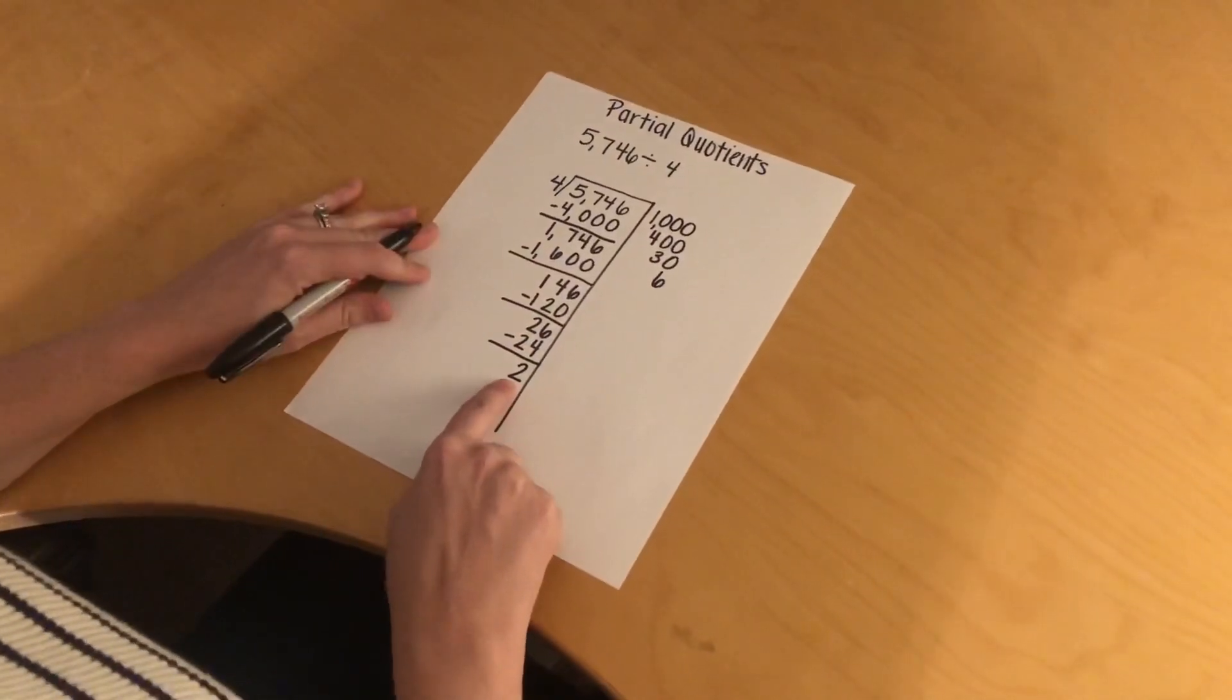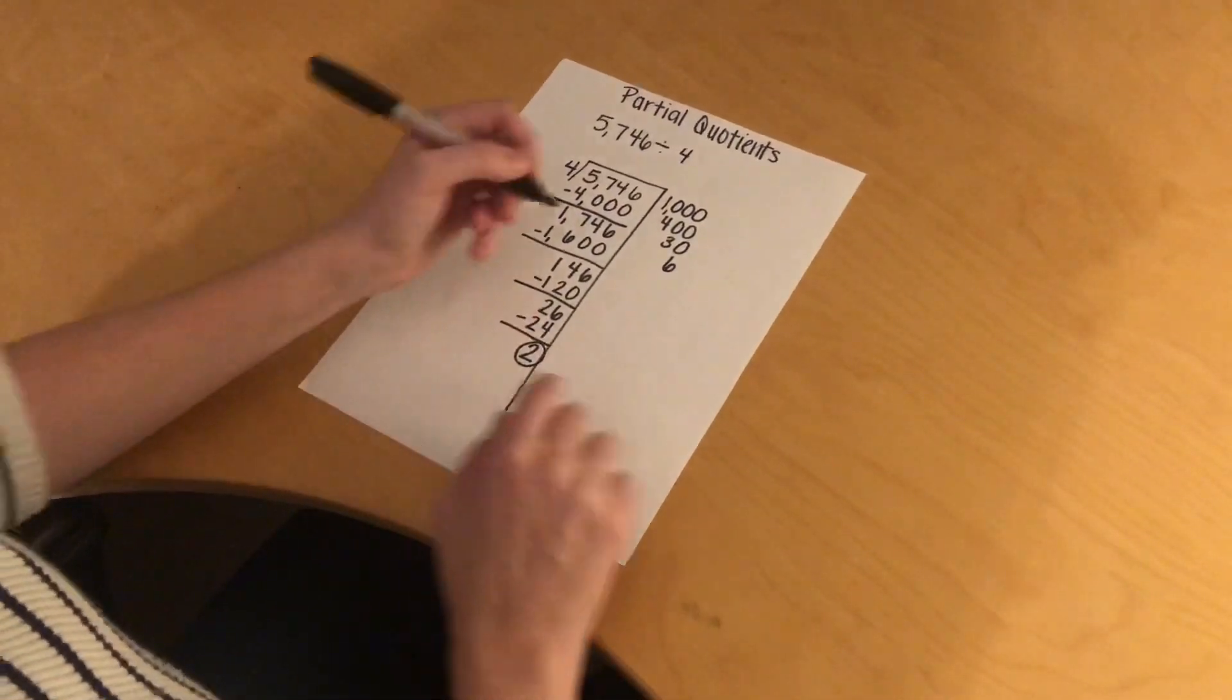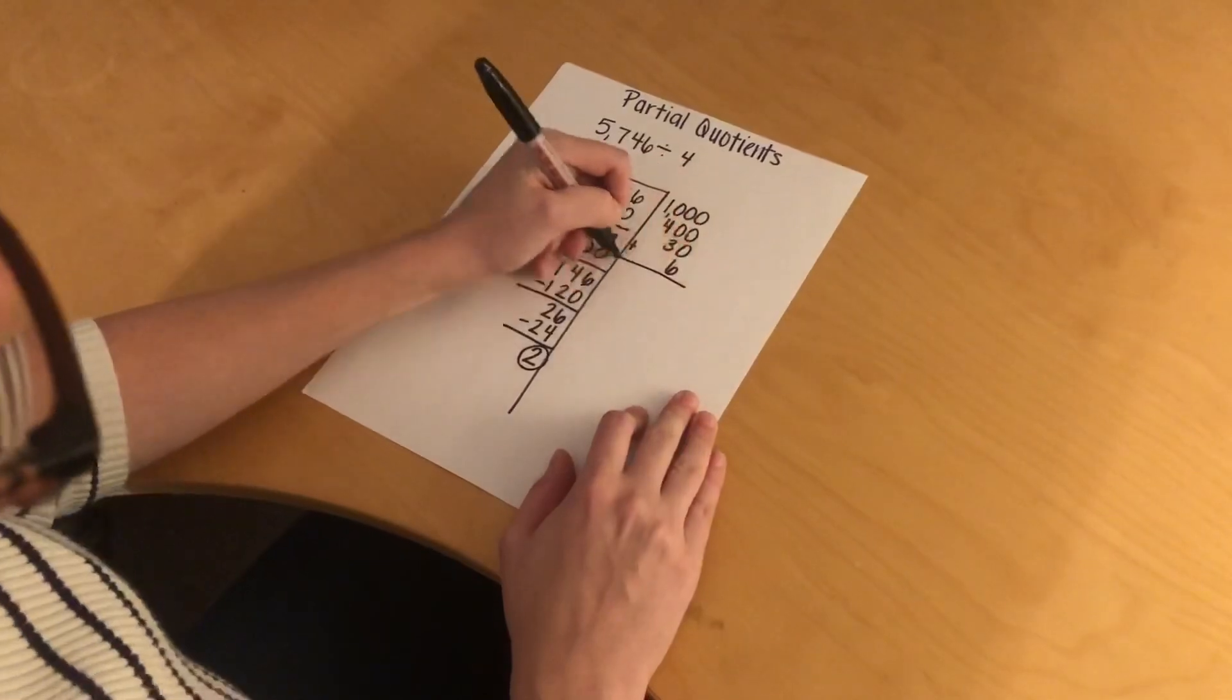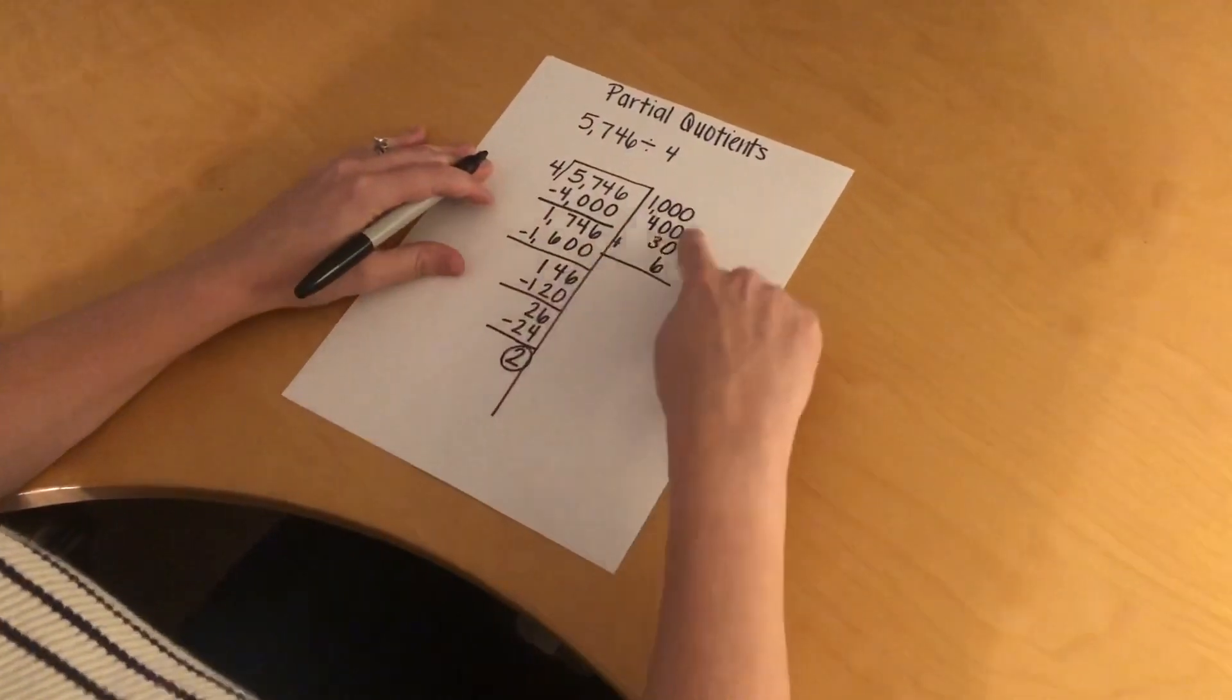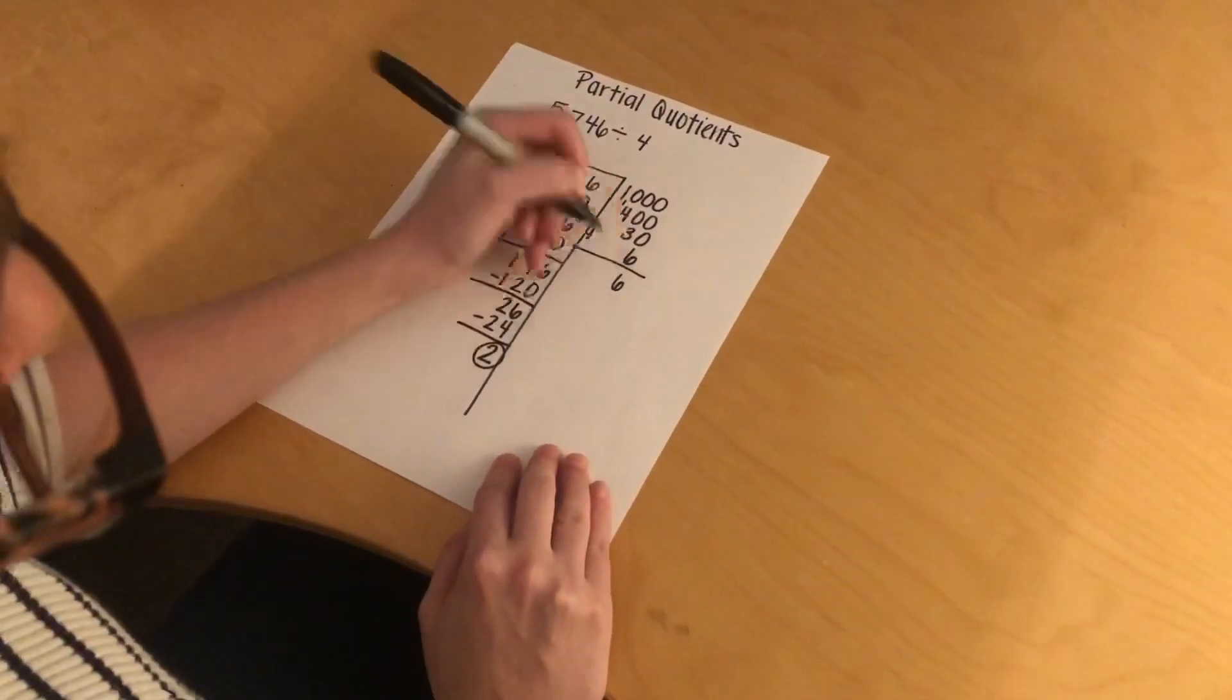This number is now less than this number, so that means that I am done. This is going to be my remainder, and I need to add up all these partial quotients. So when I was writing the numbers on the side, I made sure that I lined them up by place value, so it's easier for me to add.